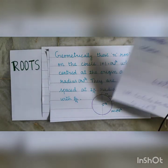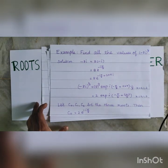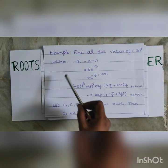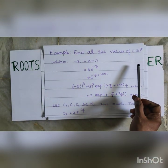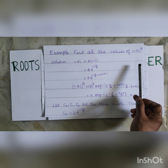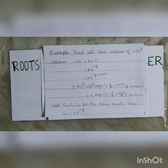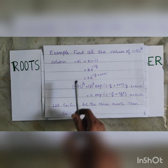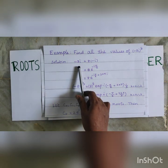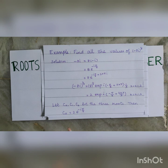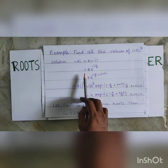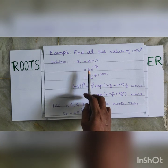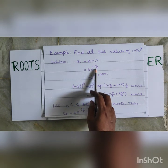Now I am going to explain the concept using an example. Find all the values of minus 8i power 1 by 3. That is, we are going to find the cubic roots — the 3 roots of minus 8i. Minus 8i can be written as 8 into minus i, and minus i is e power minus i pi by 2. Therefore, we can write minus 8i as equal to 8 into e power minus i pi by 2.